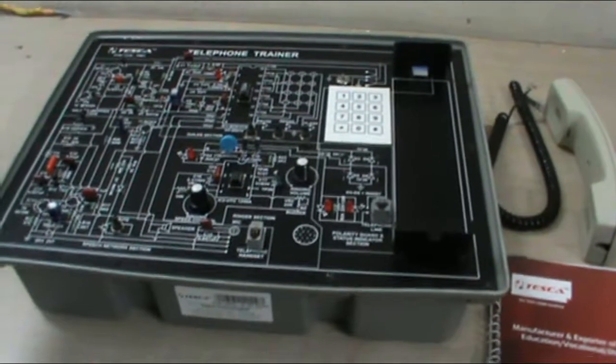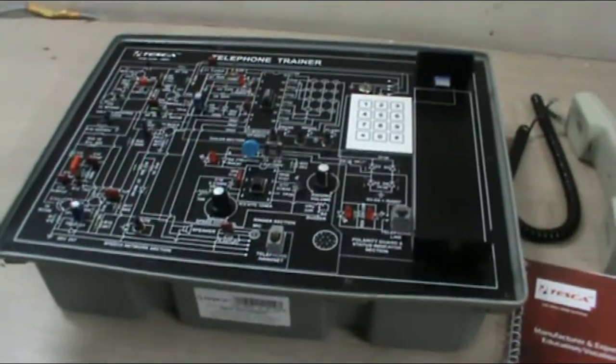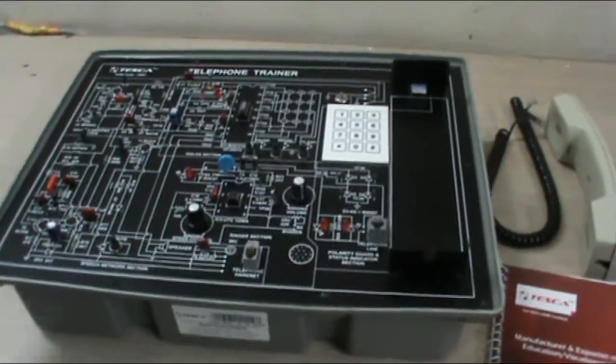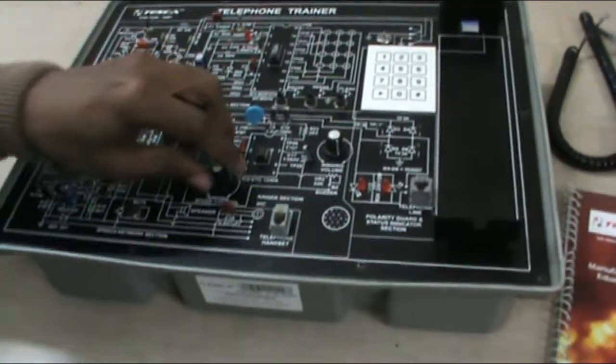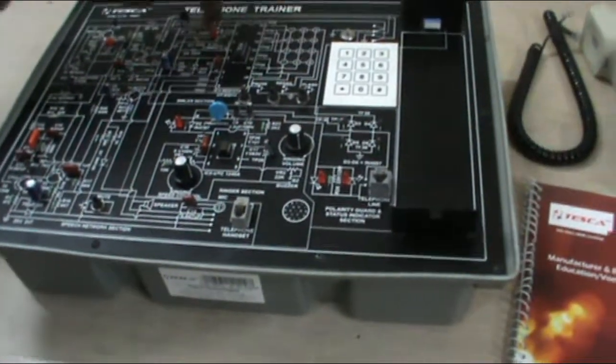This is the demonstration video of telephone trainer. The order code of this product is 10901. This is the actual trainer and these are the different block diagrams and actual circuits of this product.